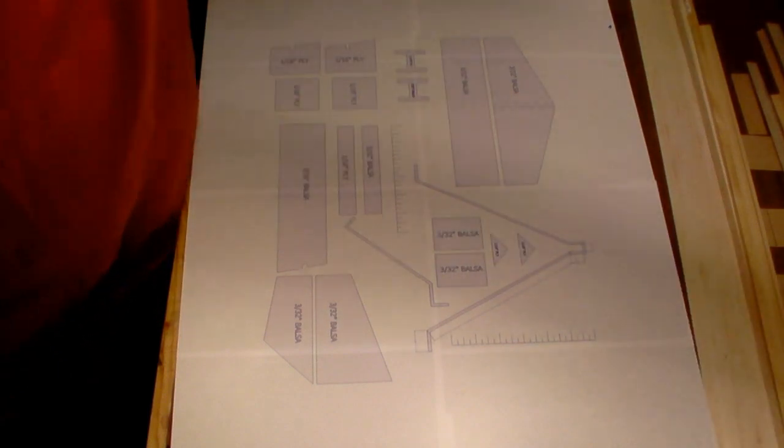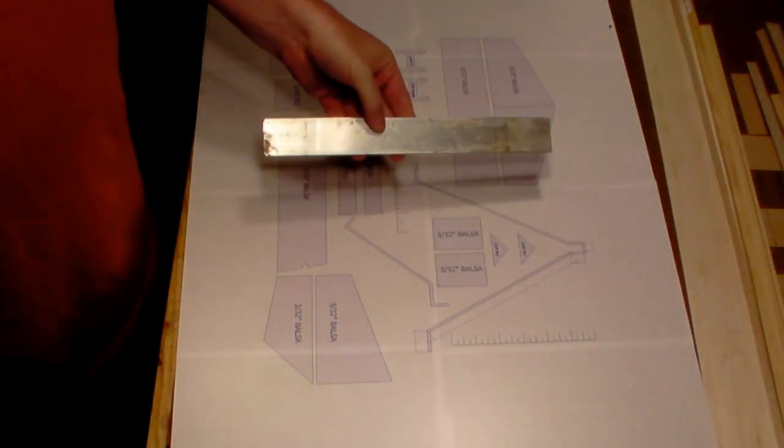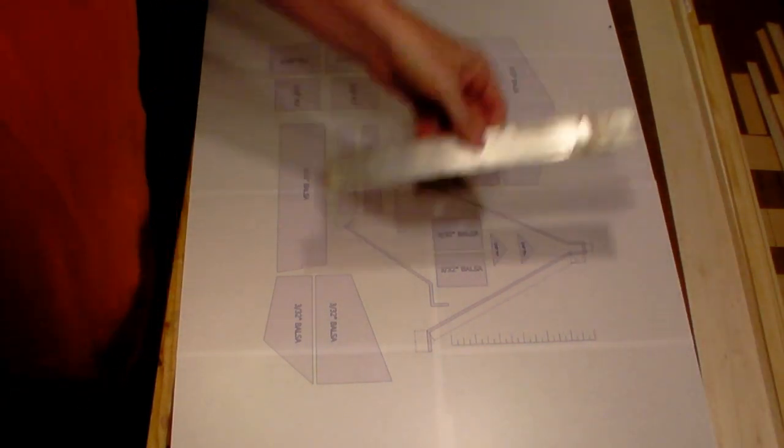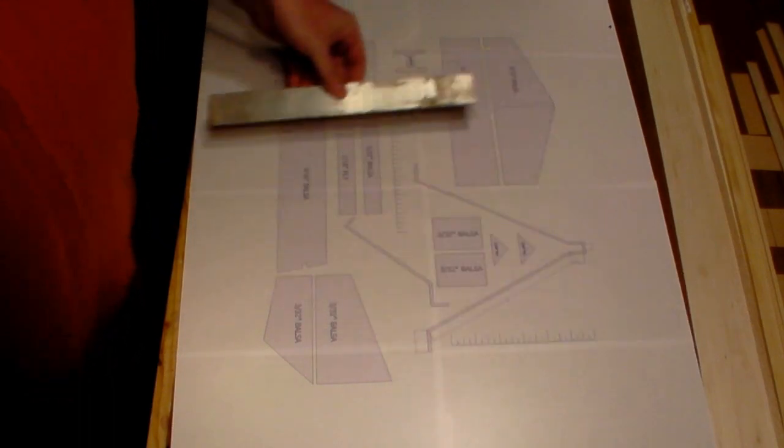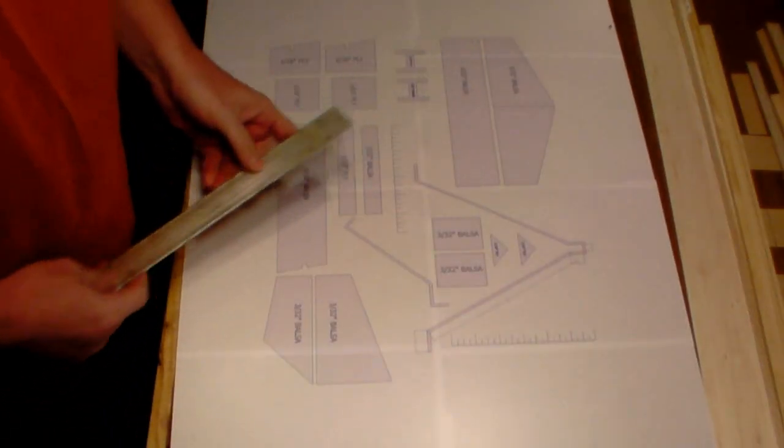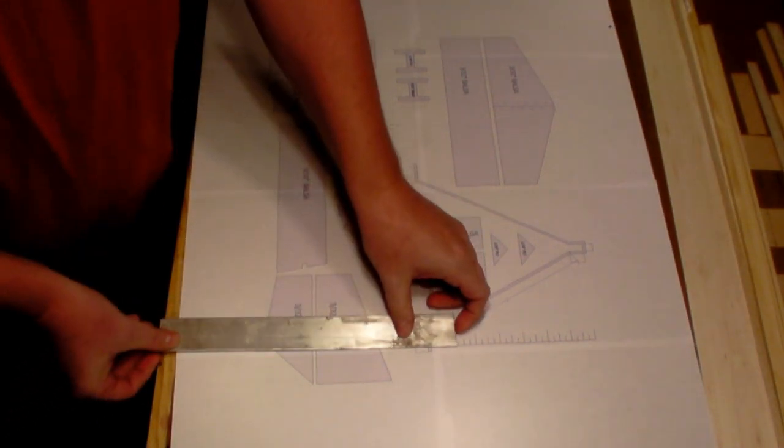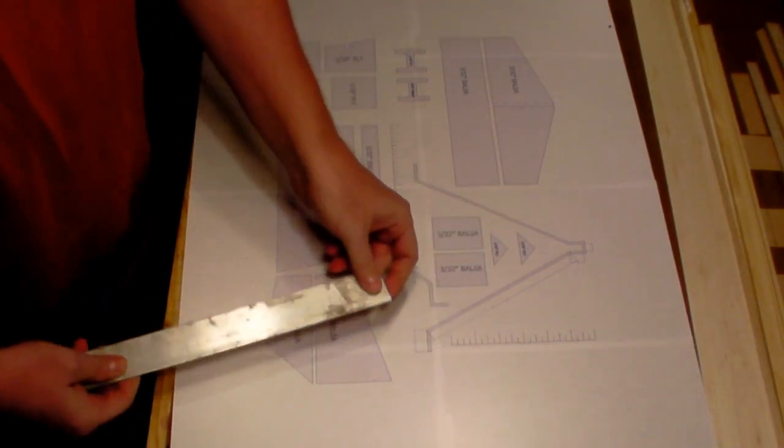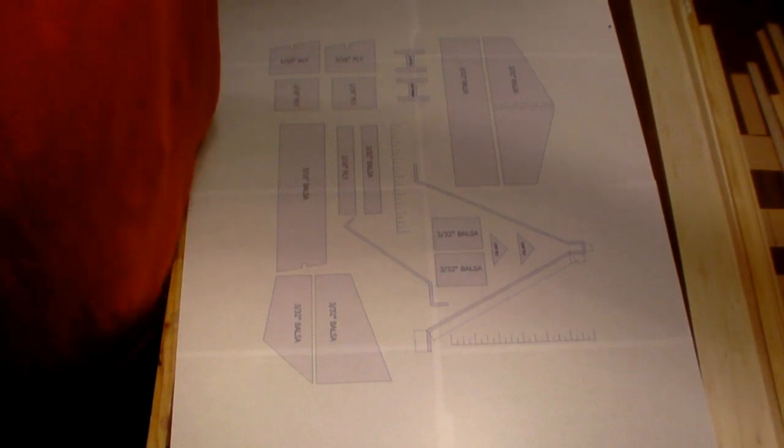Then I just take my straight edge, which in this case I just use an old scrap piece of aluminum, and I lay it up and I trim back the pages to where I'm trimming off a quarter inch all the way around, which just so happens that when I trim it, it butts up to the line segments that are there.